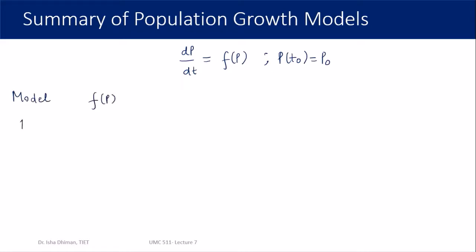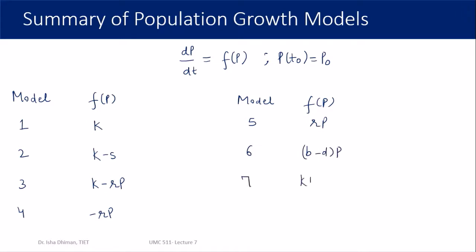Depending upon the value of f(p), we have different models. Model 1: f(p) = k; Model 2: k - s; Model 3: k - r·p; Model 4: -rp; Model 5: +rp; Model 6: b - d (birth and death); Model 7: kp(1 - p/p_max). Models 1 and 2 are linear growth models since the rate of change is constant. Models 3, 4, 5, and 6 involve exponential growth and decay, while Model 7 is the logistic growth model.